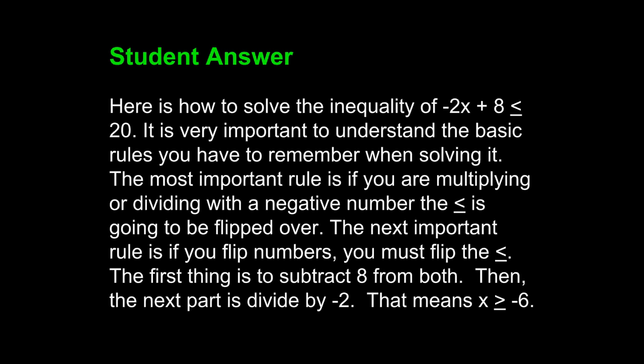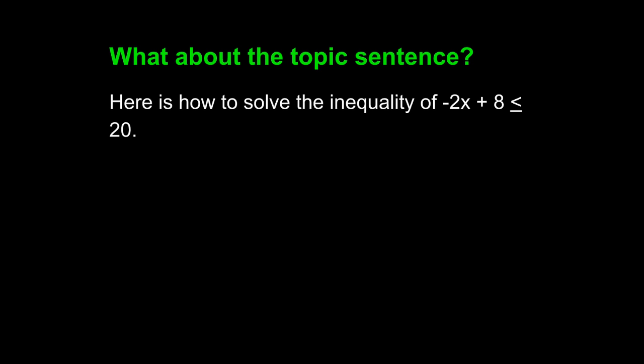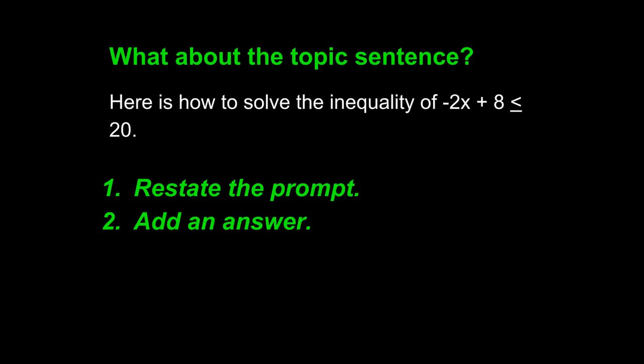This student answer demonstrates flaws in writing — flaws that we must fix. Let's ignore the mathematical accuracy for a moment and focus on the writing. What about the topic sentence? The topic sentence is crucial in a well-written paragraph. Every topic sentence responding to a prompt must complete two tasks: first, it must restate the prompt; second, it must add an answer.